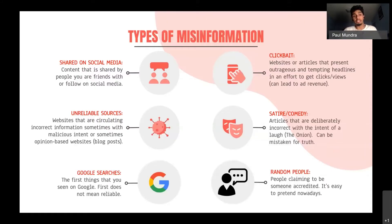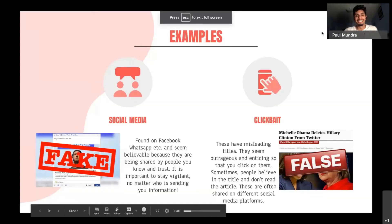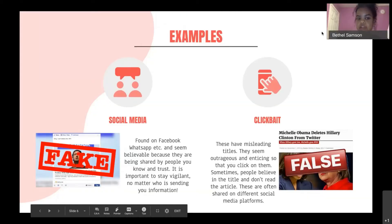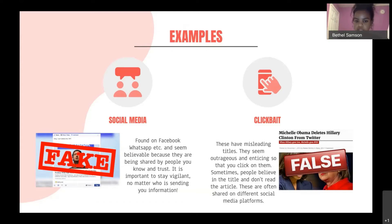There are a lot of types of misinformation. We can see misinformation shared on social media and unreliable sources, even in Google searches when you're trying to find an answer for something. It also comes up in the form of clickbait, satire, and random people who may be claiming to know something that they really don't know. On the left side, you can see social media — examples include Facebook or even WhatsApp — apps where anyone can share, which means not everything posted is going to be real.